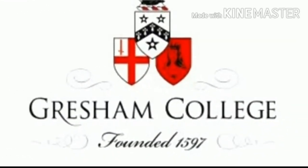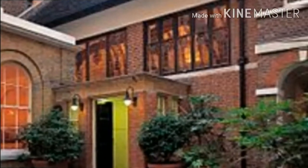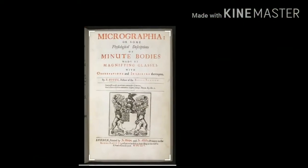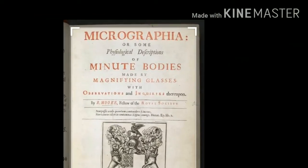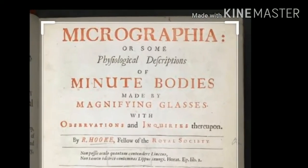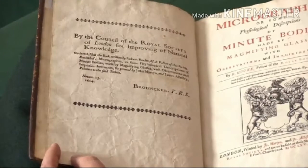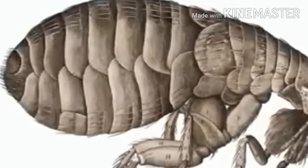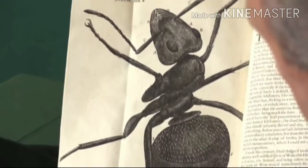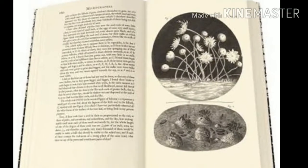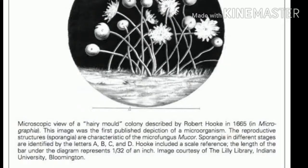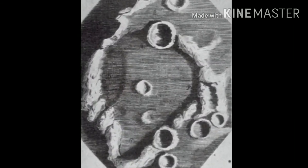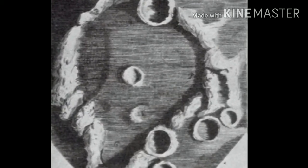Hooke was also professor of geometry at Gresham College. Robert Hooke's 1665 book Micrographia was the first important work on microscopy. It contains large-scale, finely detailed illustrations of some of the specimens Hooke viewed under the microscopes he designed. It also contains the earliest record of an observed microorganism, a micro fungus Mucor. At the end of the book there were observations of the stars and moon as seen through a telescope.